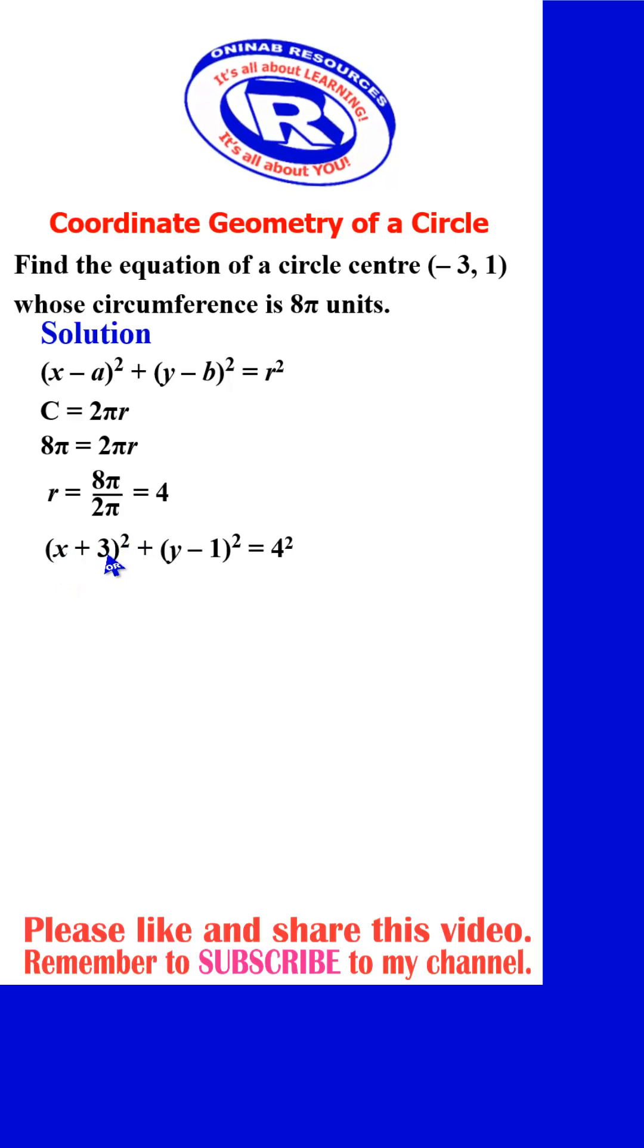Expanding this, we have a quicker way of expanding. Square this x, we have x². 3 times x gives 3x, multiply by 2 gives 6x, then square this 3 gives plus 9. Then plus square y, we have y². Y times -1 gives -y, multiply by 2 gives -2y, then squaring -1 gives plus 1, is equal to 16. Collecting the terms